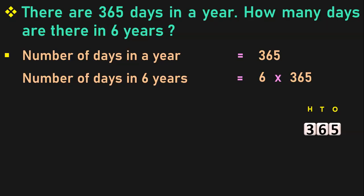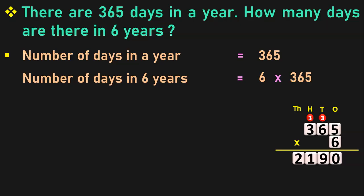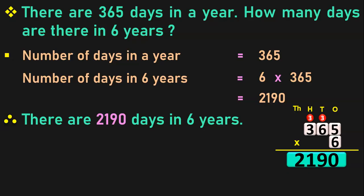Write down the number 365 with its place values — 1s, 10s, and 100s. Multiply it by 6, a single-digit number, written in the 1s place. Begin multiplication from the 1s place: 6 into 5 is 30 — 0, carry over 3. 6 into 6 is 36, plus 3 is 39 — 9, carry over 3. 6 threes are 18, plus 3 is 21 — 1 in the 100s place and 2 moves to the 1000s place. So the answer is 2190. Therefore, there are 2190 days in 6 years.